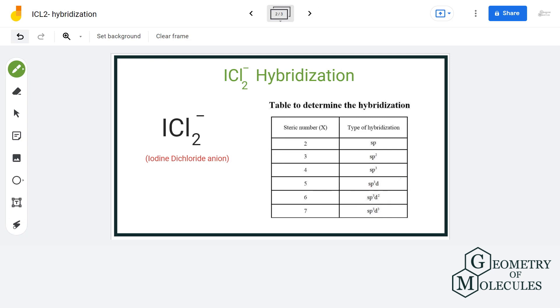So, let us add the two. We have two sigma bonds plus three lone pairs of electrons, that equals to the steric number of five, which corresponds to sp3d hybridization. Thus, this ion has sp3d hybridization.